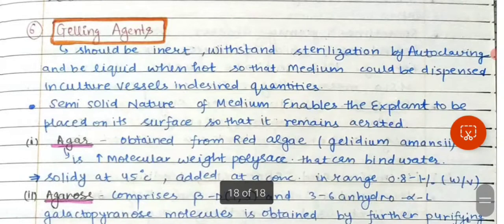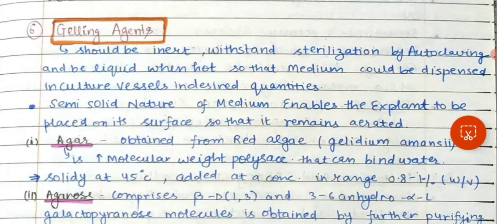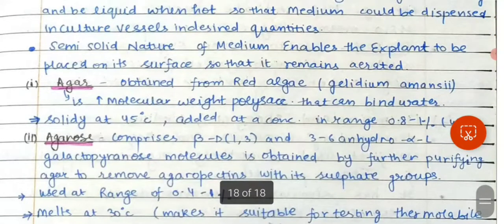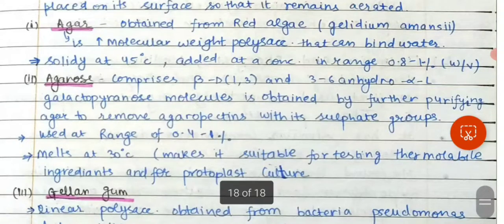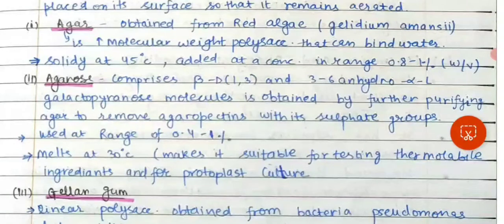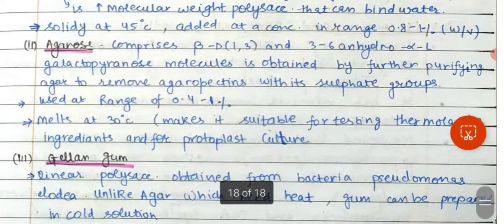Gelling agents should be inert, withstand sterilization by autoclaving, and be liquid when hot so that the medium can be dispensed into culture vessels in desired quantities. The semi-solid nature of the medium enables the explant to be placed on its surface so that it remains aerated. Agar is commonly used; it is obtained from red algae and is a high molecular weight polysaccharide. It solidifies at 45°C and is added at a concentration in the range of 0.8 to 1%.